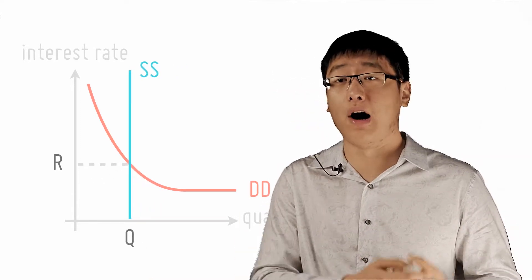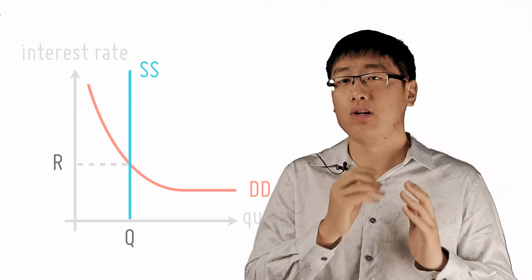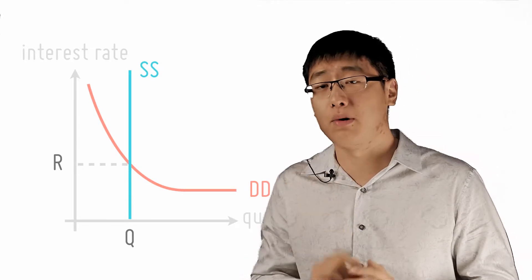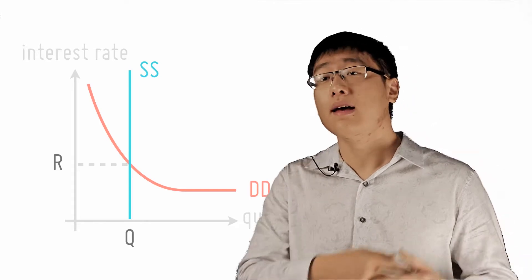For the A-level syllabus, you're not required to know how the money supply changes, but we know you're interested. So in the last lecture of this topic, we included a special checkpoint about manipulation of money supply. In that checkpoint, we explain the mechanisms through which the central bank changed the money supply.